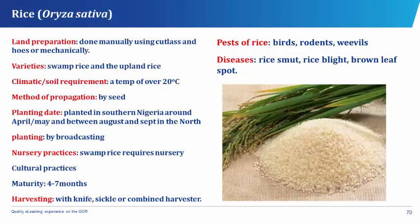Rice, which has its botanical name as Oryza sativa. Rice is another popular cereal crop grown and consumed by nearly half of the world's population. It is also a member of the grass family, the Gramineae. The seed or fruit of rice is a caryopsis — that is, it has its epicarp fused with a mesocarp.